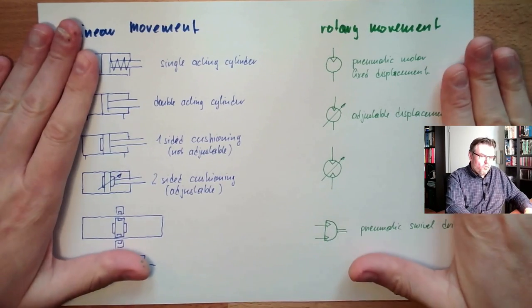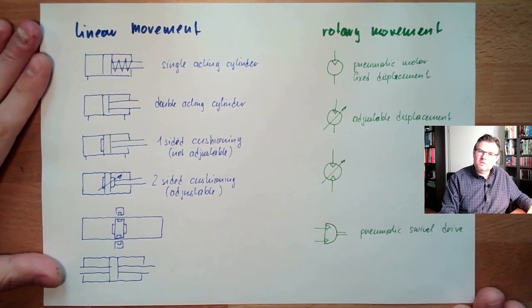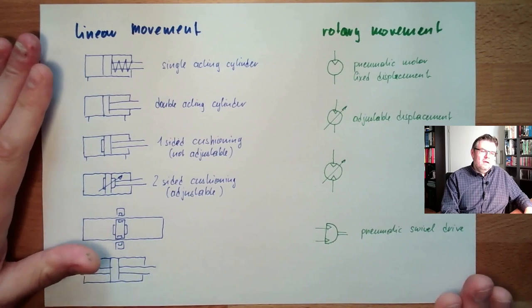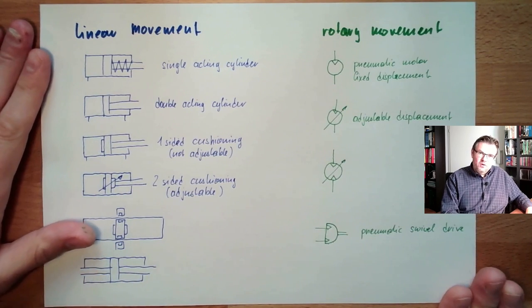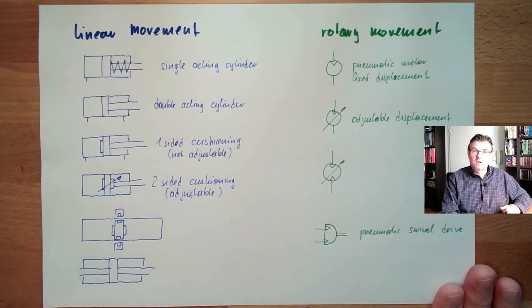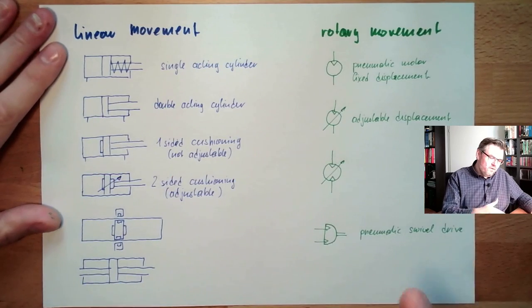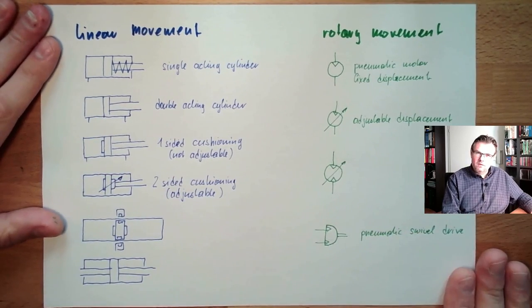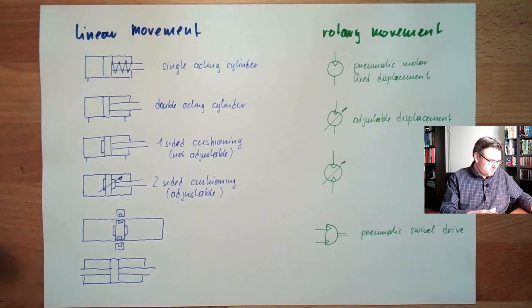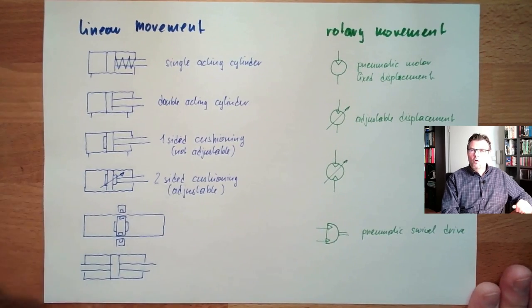So these are the different symbols usually used for working elements. There are a little bit more symbols, of course, so there's, like I said, the tandem cylinder and so on, however, it should be easy for you to interpret those symbols when seeing them, because basically they look the same, and if you're not sure what this is, you can always look them up. These are the most common ones. Schematic symbols for the working elements.